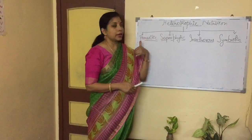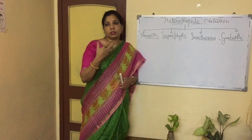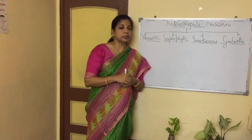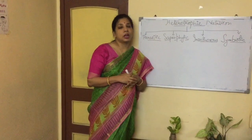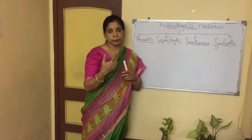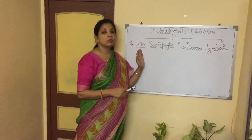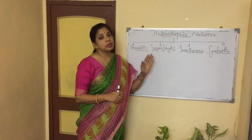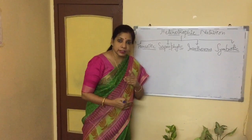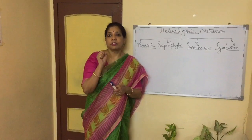We will start with parasitic nutrition. During the 16th and 17th century, a lot of work was done in Europe, especially in Greece, so mostly the origin of these words is Greek. 'Para' means depending on someone. In the parasitic mode of nutrition, the living thing does not prepare its own food; it cannot even digest its food — it just absorbs the digested food.